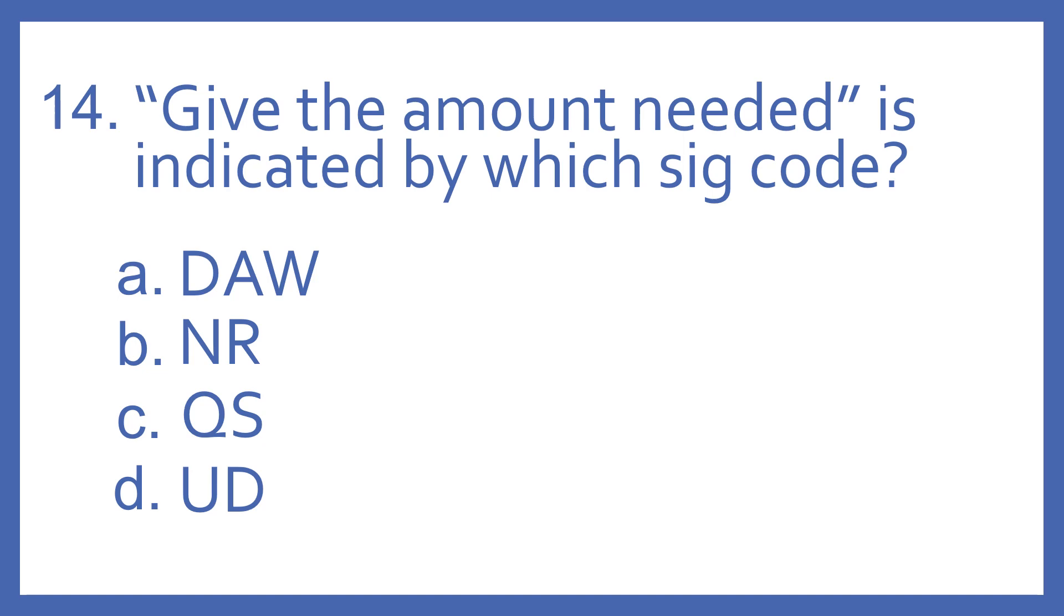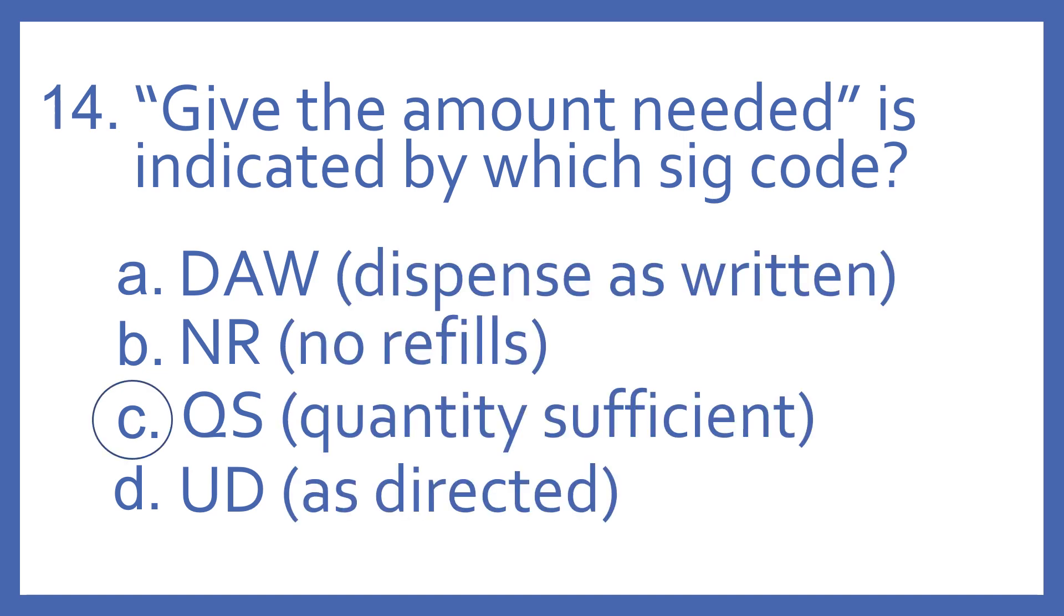Number 14, give the amount needed is indicated by which SIG code? A, DAW. B, NR. C, QS. Or D, UD. And the answer is C, QS. That stands for quantity sufficient. So that means to give the amount needed. DAW stands for dispense as written. NR is no refills. And UD means as directed.